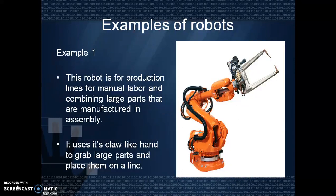Here are some examples of robots. In the first example, this robot is for production lines for manual labor and combining large parts that are manufactured in assembly. It uses its claw-like hand to grab large parts and place them on a line. So here in this robot, proximity sensors and tactile sensors are used.